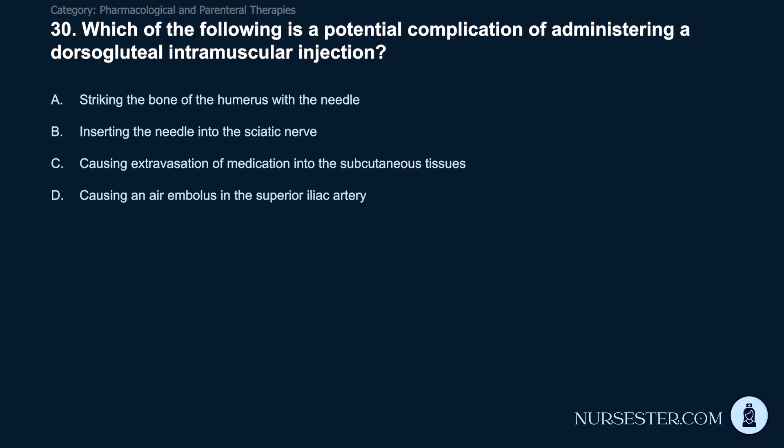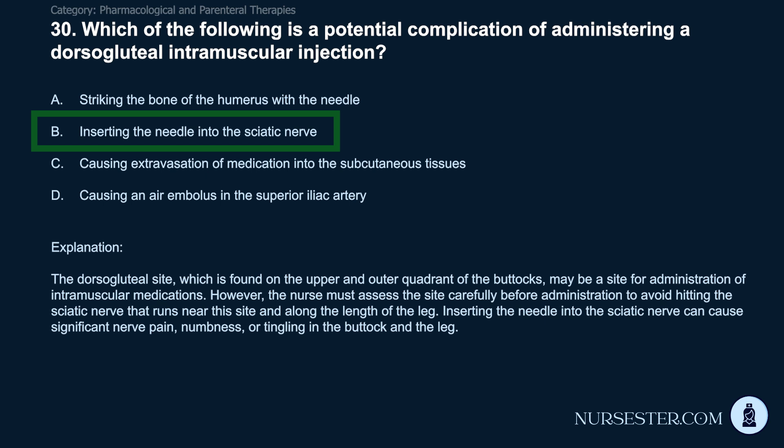Question 30: Which is a potential complication of administering a dorsogluteal intramuscular injection? A) Striking the bone of the humerus with the needle. B) Inserting the needle into the sciatic nerve. C) Causing extravasation of medication into subcutaneous tissues. D) Causing an air embolus in the superior iliac artery. Correct answer: B. Inserting the needle into the sciatic nerve. The dorsogluteal site is found on the upper outer quadrant of the buttocks. The nurse must assess carefully before administration to avoid the sciatic nerve. Inserting the needle into the sciatic nerve can cause significant pain, numbness, or tingling in the buttock and leg.